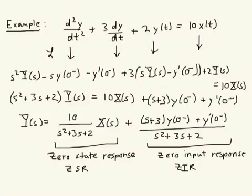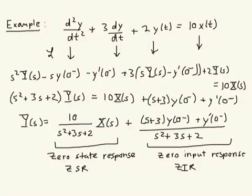And this term here we will call the zero-input response, or ZIR. We can see why these names are reflective of each part of the solution. The zero-input response is all that you would get if X(s) were zero — if the input x(t) is zero, this term goes away and you're just left with the ZIR. The zero-state response is what we get when all of the initial conditions go to zero, so the system is said to be in a zero state initially. The ZSR contains the response due to the input alone, and the ZIR contains the response due to the initial conditions alone.